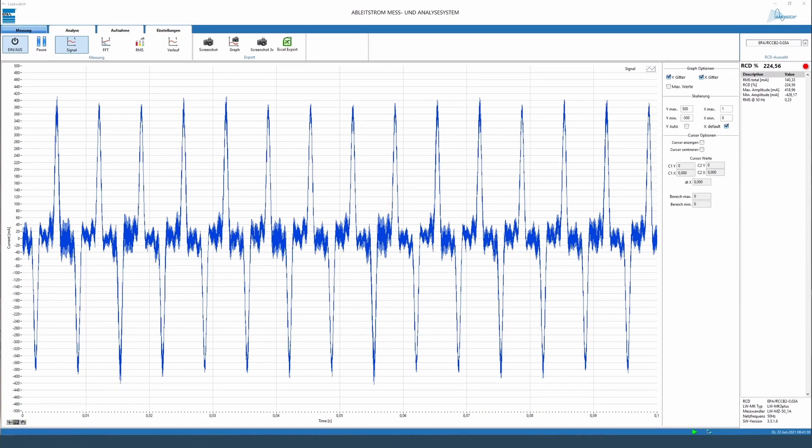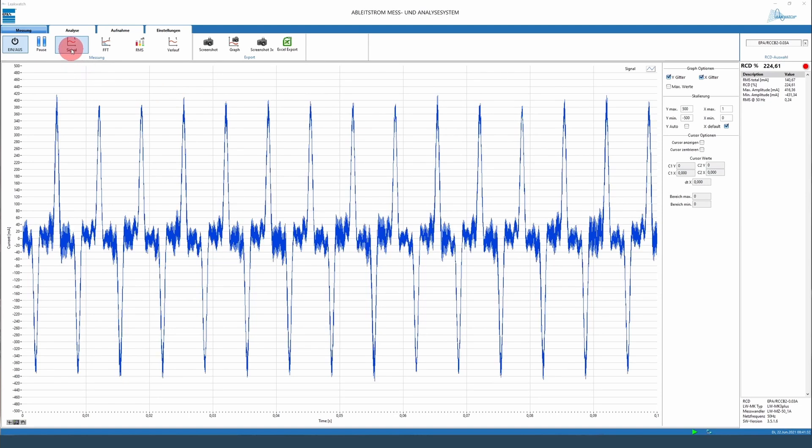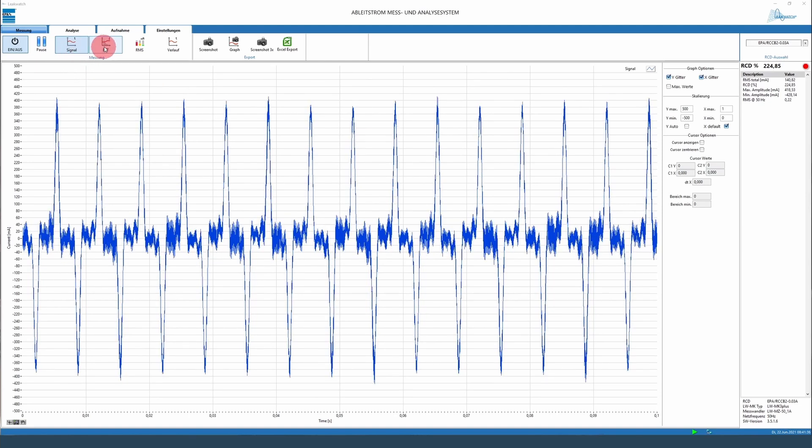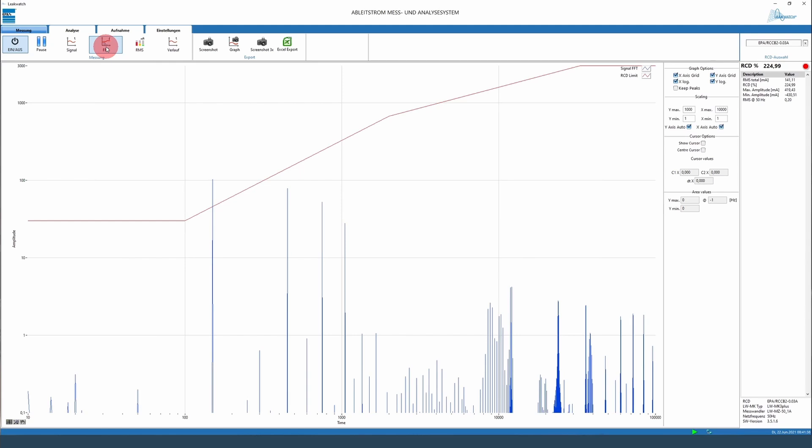The LWsoft can be used to display the current measuring signal or via the FFT tab the individual frequency components of the measured value as well as the load factor of the upstream RCCB. Tripping curves for all common RCCB models of different manufacturers are implemented in the software and can be selected via a dropdown menu.